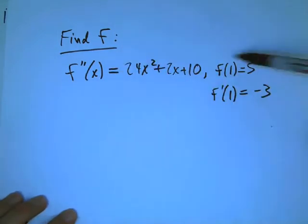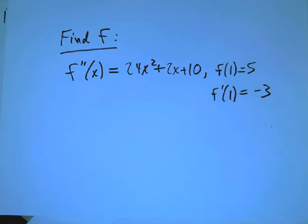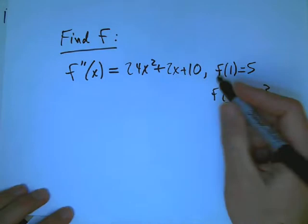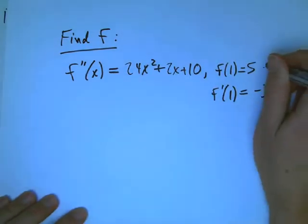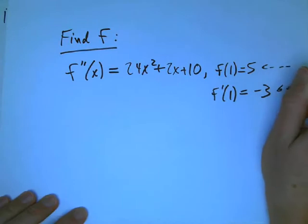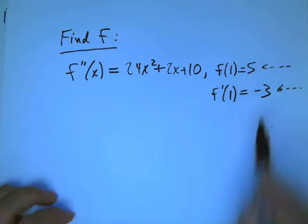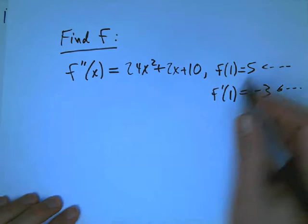This is like one of the problems I did at the end of the last video. But now we're going to anti-differentiate twice, and it's going to be these two pieces of data, called initial conditions, that allow us to figure out exactly what the arbitrary constants are.